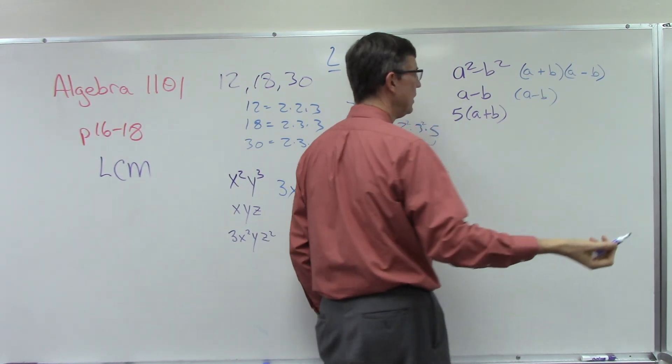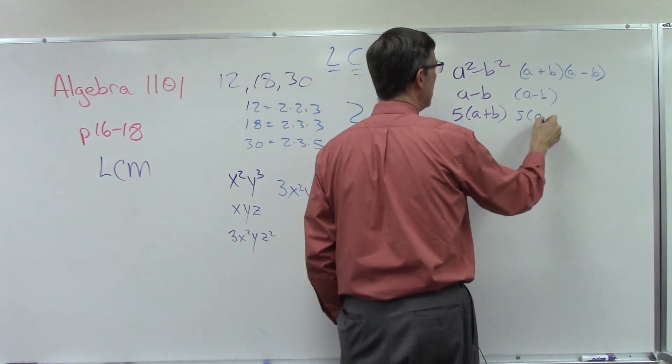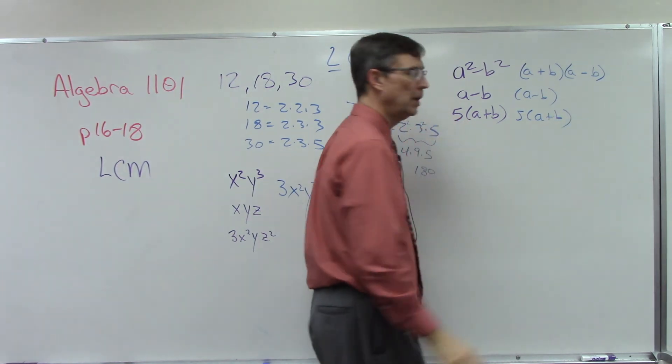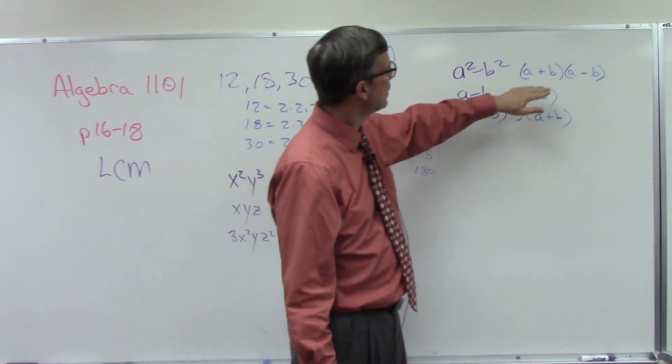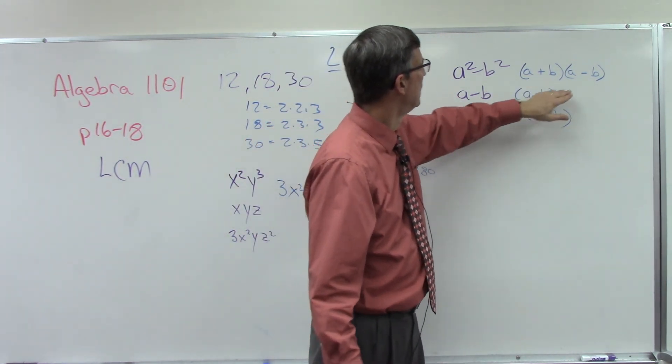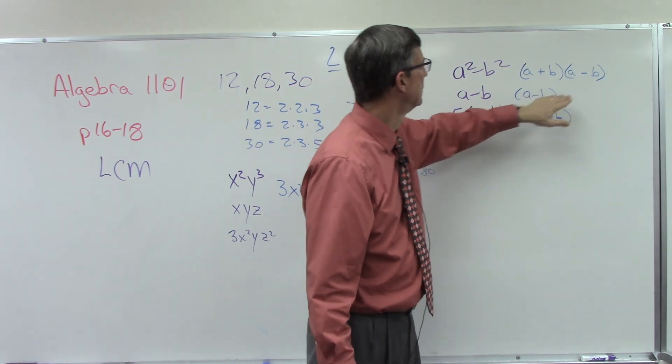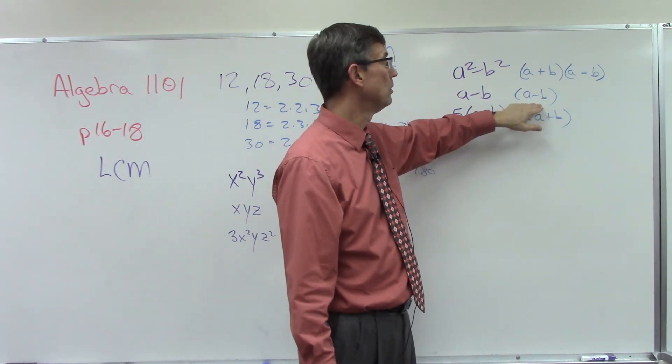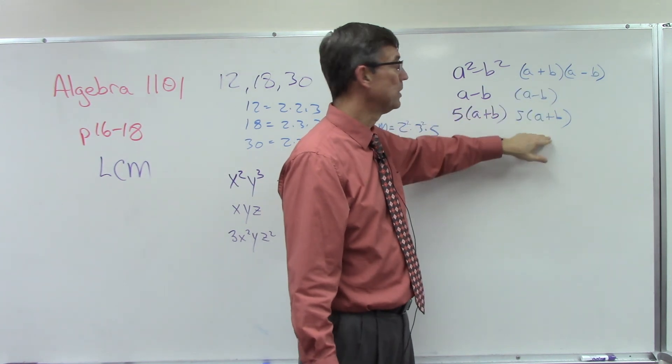If I did the foil method, first I'd have a squared. The outer is negative ab, the inner is positive ab, which means that'll cancel out, and then b times b is b squared minus b squared. This factor is just a minus b, I don't have to do anything with that. And then this is 5(a + b). So we actually have one - this is the same as this. This factor is the same as this one.